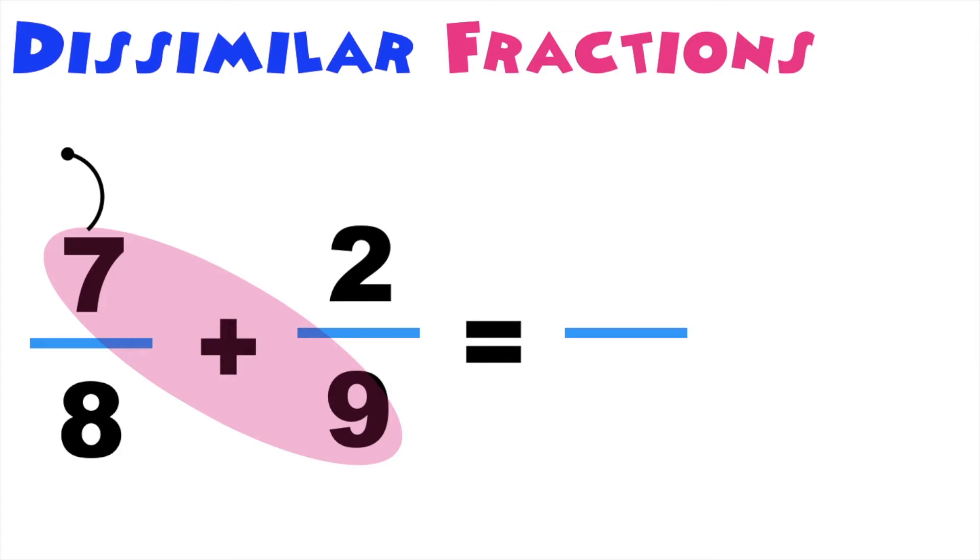First, multiply 9 and 7. 9 times 7 is equal to? That's correct, it's 63. Then 8 times 2 is equal to? Very good, it's 16.